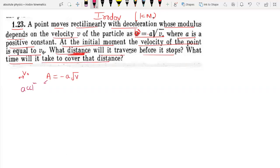This is an acceleration, so we can write A equal to dV by dt, and this is minus A, V to the power minus 1 by 2. So dV, V to power minus 1 by 2, equal to minus A into dt, and integrate on both sides.